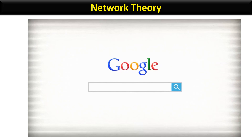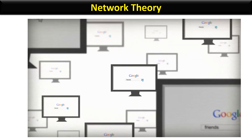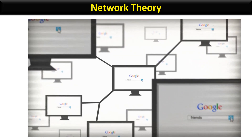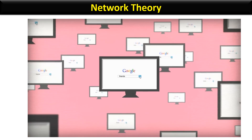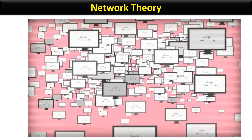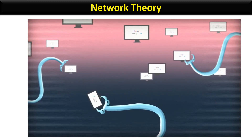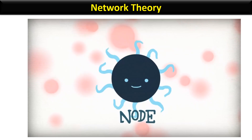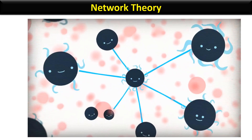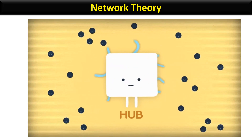An example of how network structure emerges is the algorithm used by Google. As the number of links around a search term — say, 'friends' — increases, connections begin to form among millions of different searches using that term. What Google has cleverly accomplished is a real-time mathematical model for how to predict the emergence of growing connections among billions of search terms. The algorithm Google derived collects the number of references to any search object. As references increase, the number of links also increases, creating a node. As the node increases in size, it eventually becomes a hub, which links to many nodes.